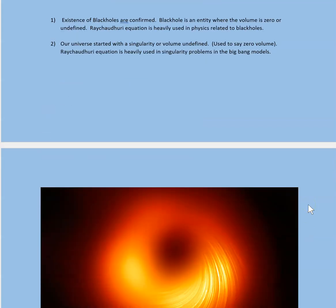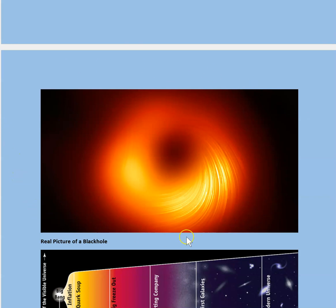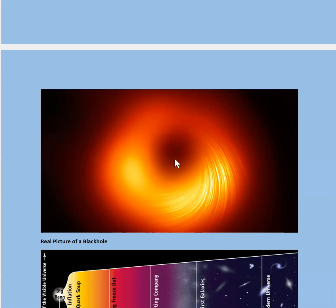Black holes are confirmed. This is a real picture of a black hole, and the people who got this picture got the Nobel Prize. At the center is something called a singularity. Used to be, people would say the singularity has volume equals zero. But now most people say volume is undefined — like zero divided by zero is undefined; we don't know what that is. So at the singularity, Einstein's field equations break down, and we don't have any other equations.